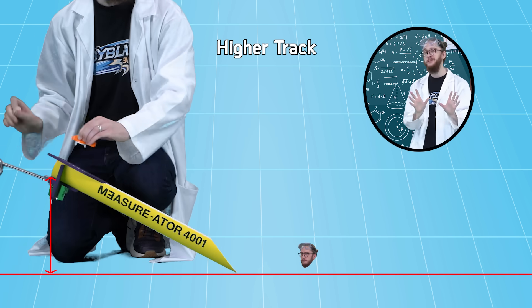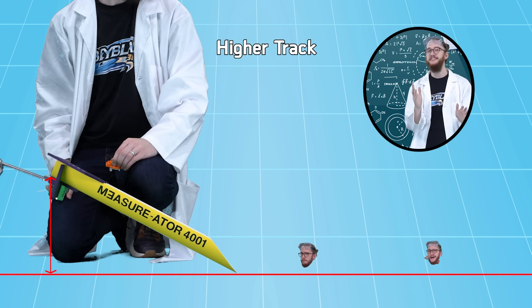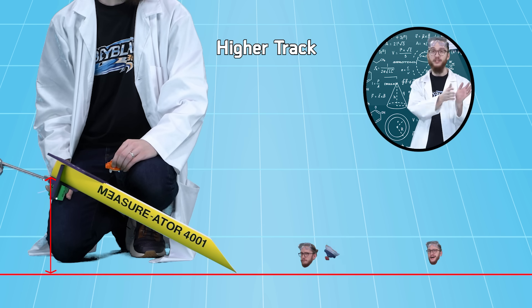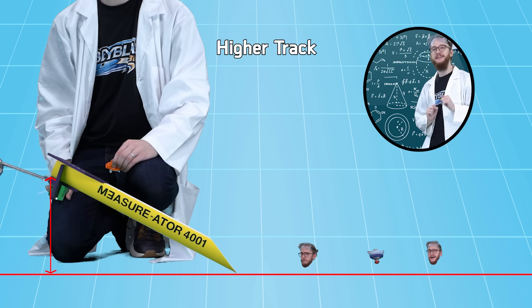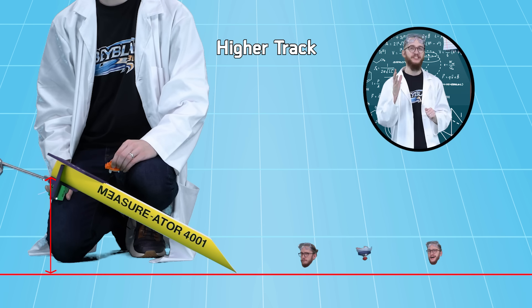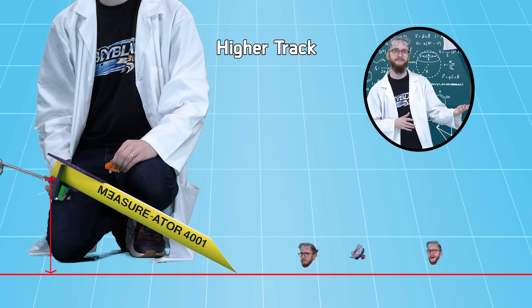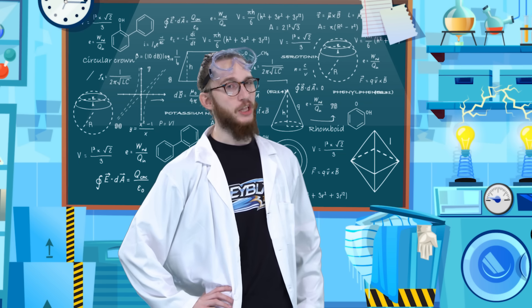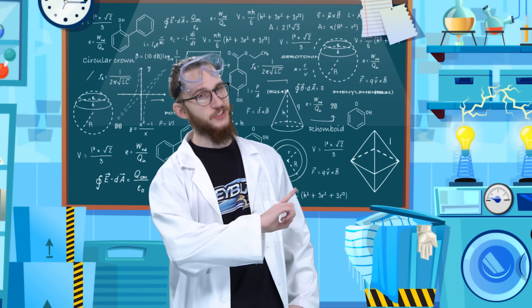But, when we launched on the higher track, even when we used the same launch power, our Beyblade travelled further. And that's because it had more gravitational potential energy in it when it was launched, based on its height. I guess you could say the lower track fell short.